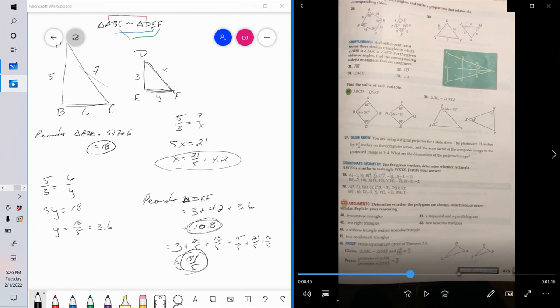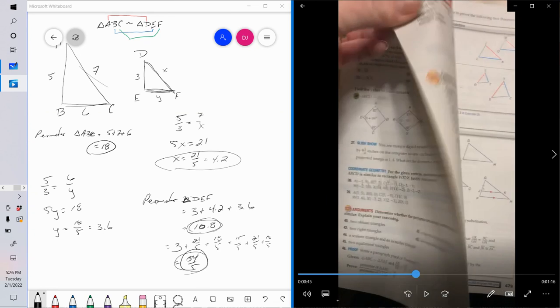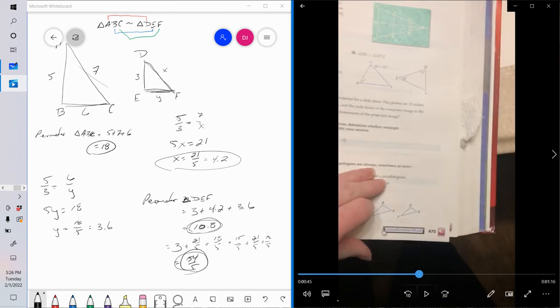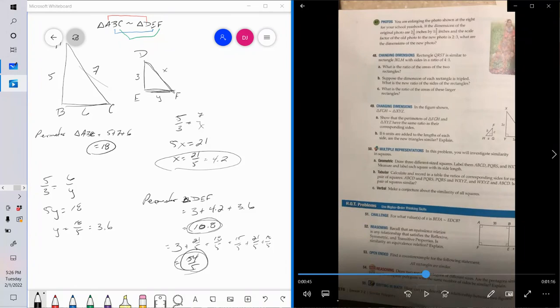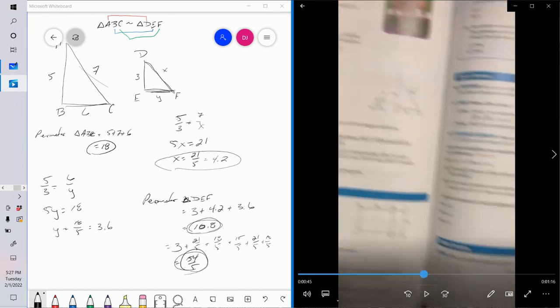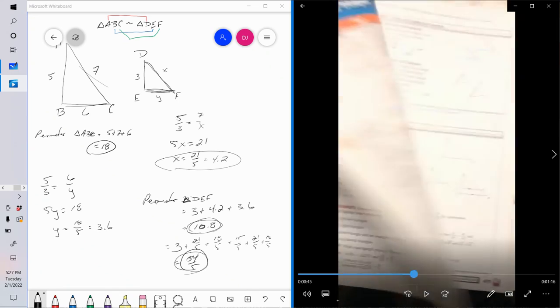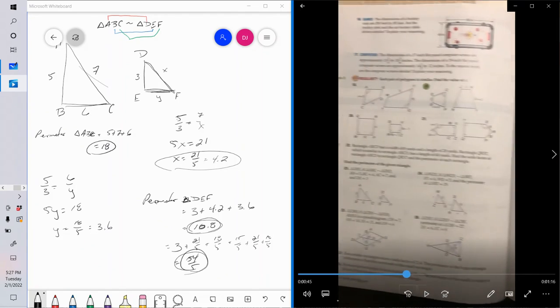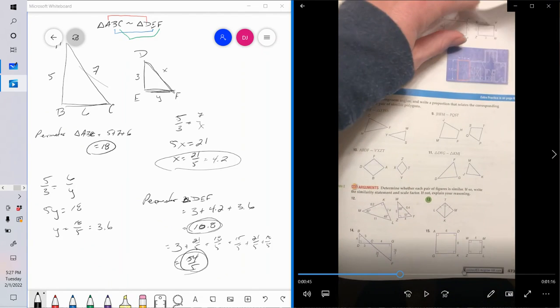So as far as similar polygons go, that's pretty much what you're going to see throughout. Just making sure here we've covered our problems. All right. So there we go. Similar polygons. It's the same thing. Ratio.